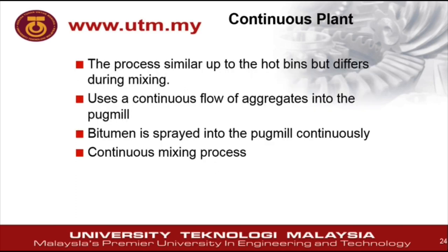Finally, the continuous plant. The process for this plant is similar up to the hot bins but differs from the batch plant in the procedure for combining materials for mixing. The plant uses a continuous flow of aggregates into the pug mill with the amount of each size fraction controlled by adjustable gate openings. Hot bitumen is sprayed into the pug mill continuously, making mixing a continuous process. The tip trucks are loaded by continuous discharge from the pug mill.